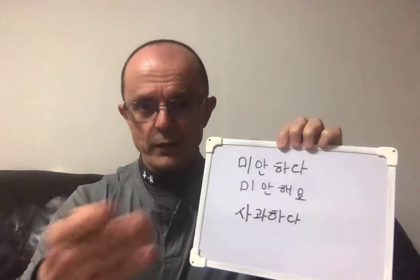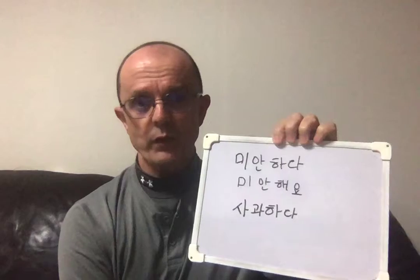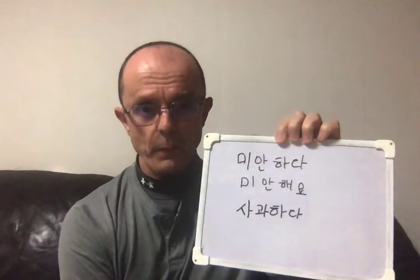사과하세요 is the polite way to ask someone to apologize. Again, a lot like 미안해 and 미안하다, it's not very common, but you might use it among friends or people you're really close to. And 사과 as apple — it's the exact same characters and exact same pronunciation.